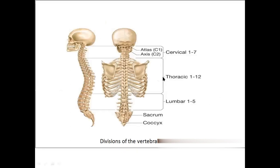The cervical vertebrae are labeled C1 through C7, thoracic as T1–T12, lumbar as L1–L5, and sacral as S1–S5. The first cervical vertebra (C1) is called atlas, and the second cervical vertebra (C2) is called axis.